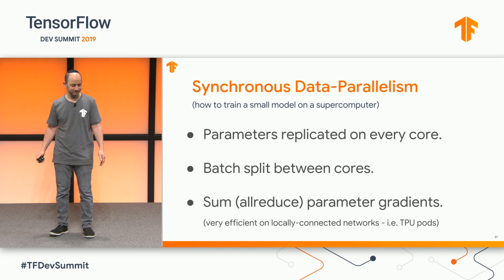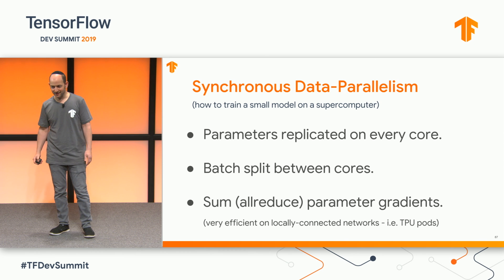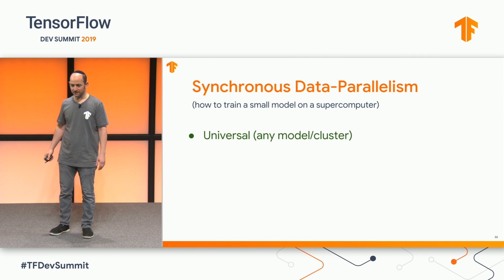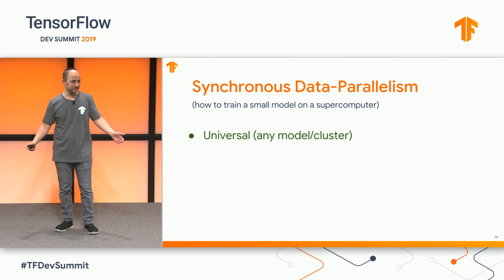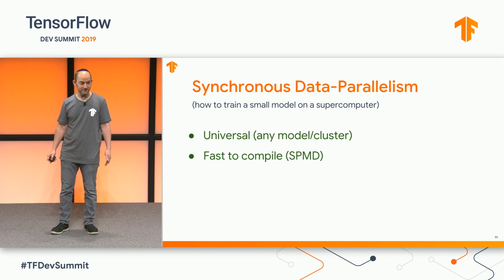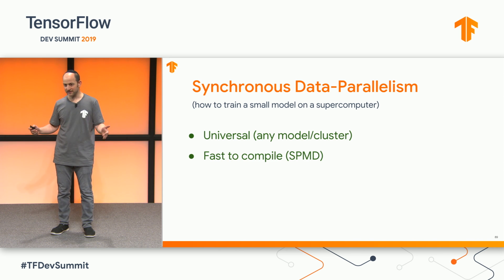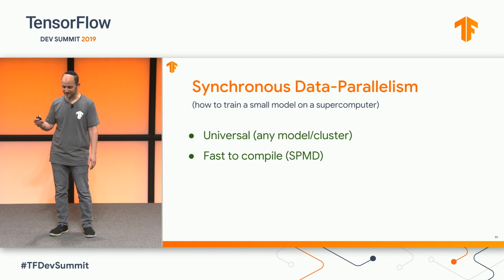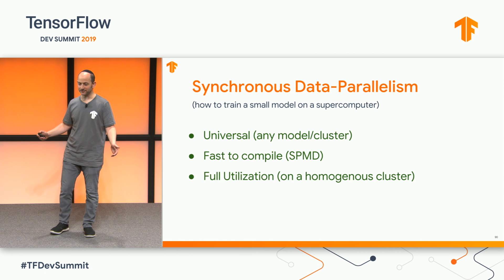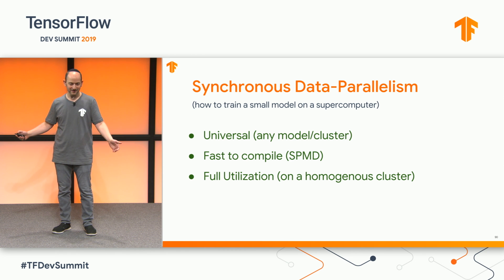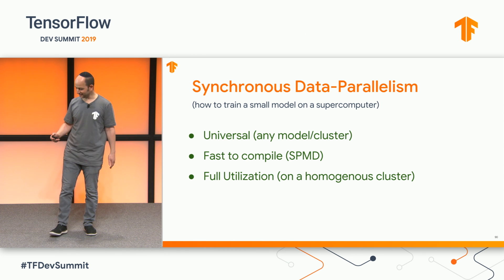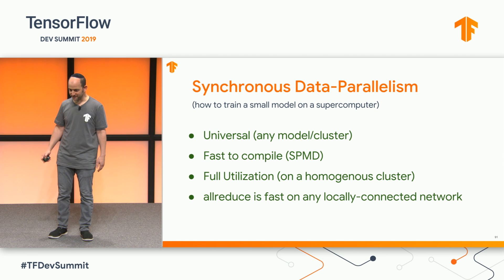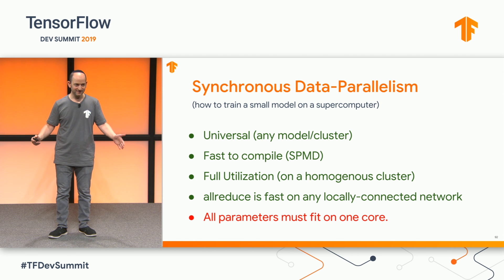This works really well. The communication is fast on our kinds of networks, on lots of different types of networks. So this is roughly what everyone's doing. The great things about it are it's universal — you can use any model architecture, fast to compile because you're writing SPMD code, where you write code for what one device is doing and compile it and send it to every device. You get roughly full utilization because every device is doing roughly the same thing, so nobody's waiting for anybody else. The only problem is that you cannot train giant models, because your entire model has to fit on every device.